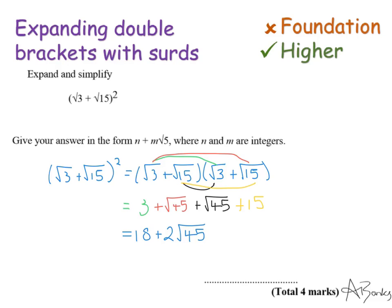So this is simplified to, and the square number that goes into 45 is 9, so root 9 root 5. So this is 18, and then 2 times root 9 is just 3, so that's 2 times 3, which is 6. 6 root 5. So that's my final answer.